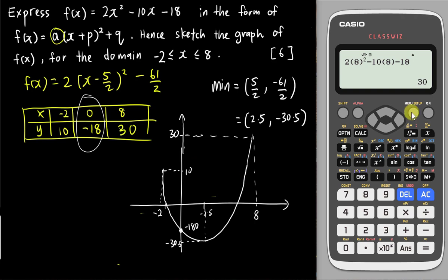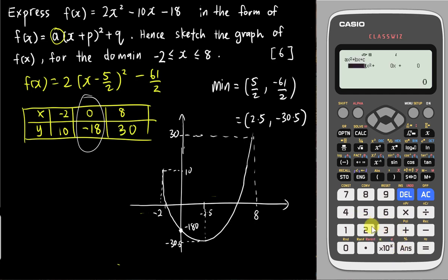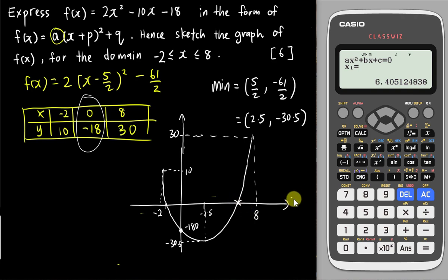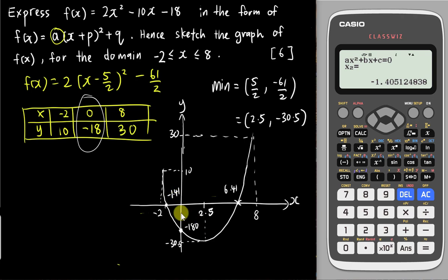When we used the polynomial mode to solve the equation, the calculator also gave us the x-intercepts. The first x-intercept is at x = 6.41 — this falls between 2.5 and 8 on the x-axis. The second x-intercept is at x = -1.41. With these, you can draw a very accurate graph with both x-intercepts, y-intercept, and the domain from -2 to 8.